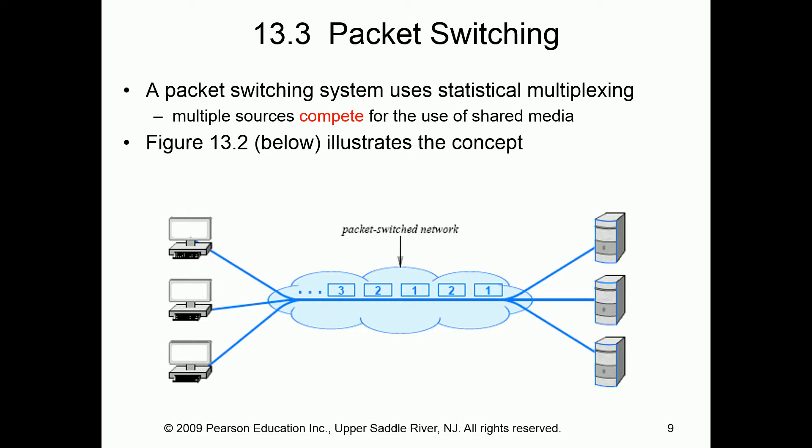Packet switching actually allows us to share a media. Instead of having multiple paths, we can share one wire, and how we communicate on that shared wire is what's important. On our shared wire, we can chunk up our conversations so that we can put multiple communications on one wire.